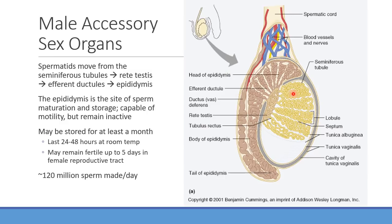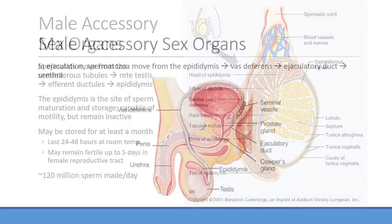Going from the seminiferous tubules where sperm are produced, they get released and stored in the testes. When the spermatids move from the seminiferous tubules, they go to the rete testis, and then get stored within the epididymis. This is where they're stored and undergo further maturation. They're capable of motility at this point but are kept in an inactive state while waiting for release. They can be stored for at least a month. Once sperm are out into the open at room temperature, they may only last 24 to 48 hours. However, in the female reproductive tract they can last up to five days. So conception doesn't have to happen right at the time of coitus — sperm remain active for several days. Males produce roughly 120 million sperm per day.